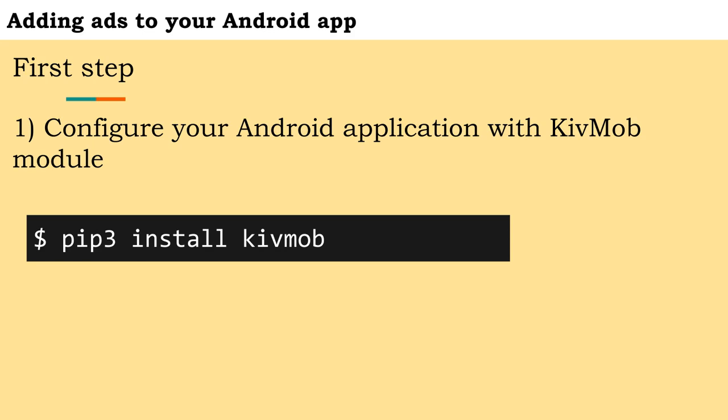Currently, Kivmob only supports the Android platform. iOS support is under development. Use the command pip3 install Kivmob to install the module.